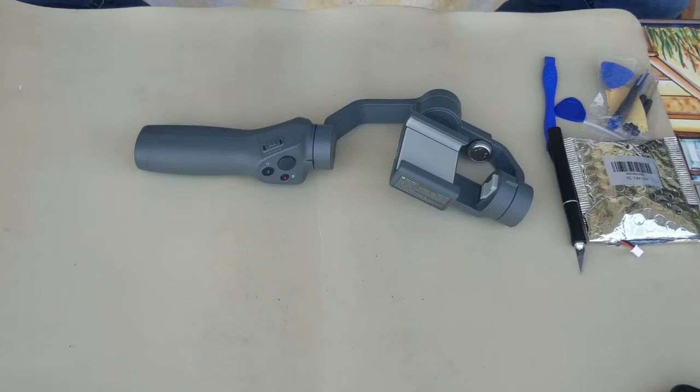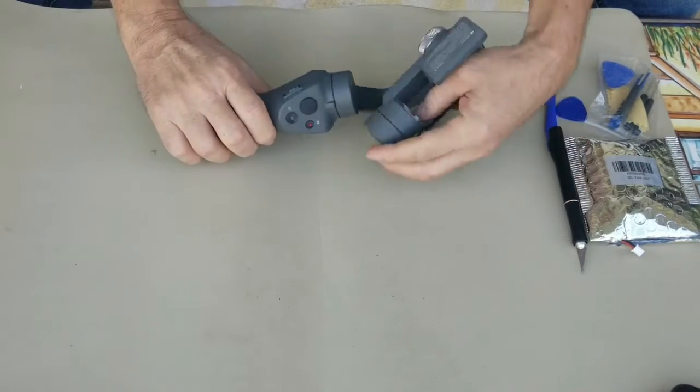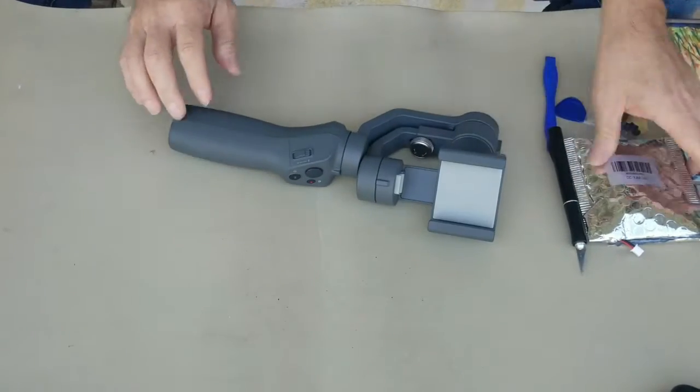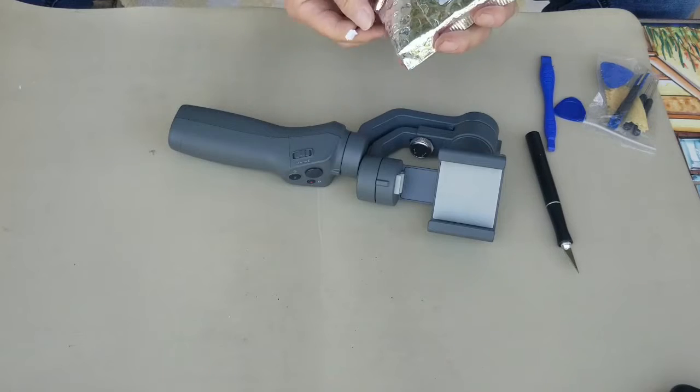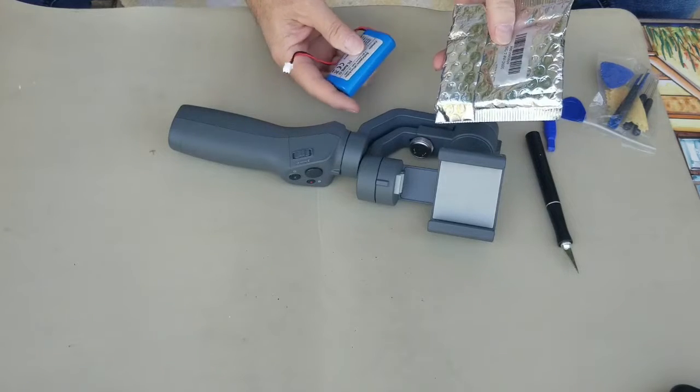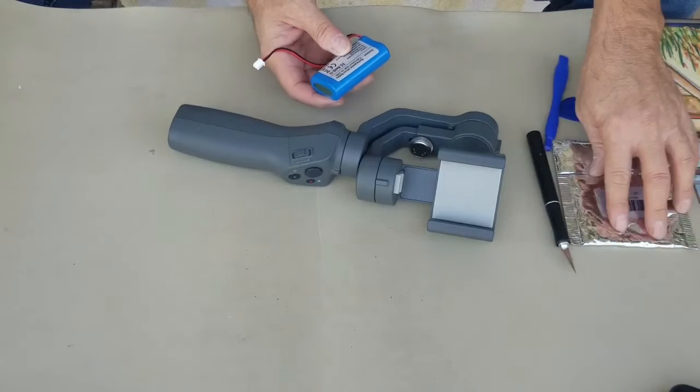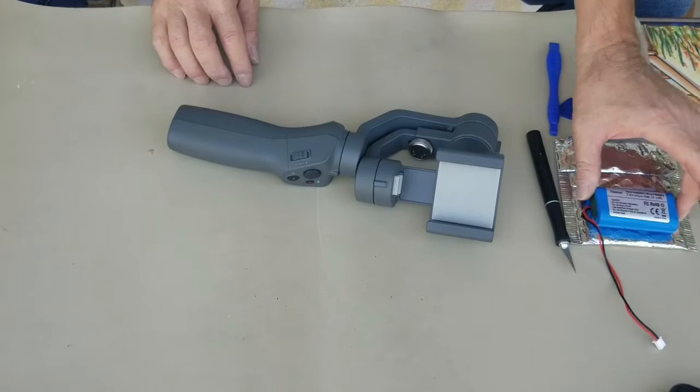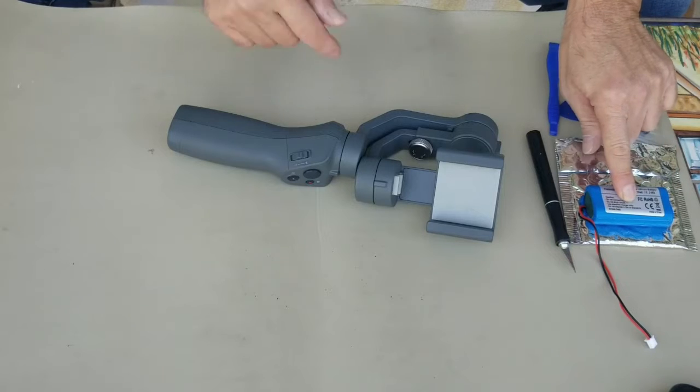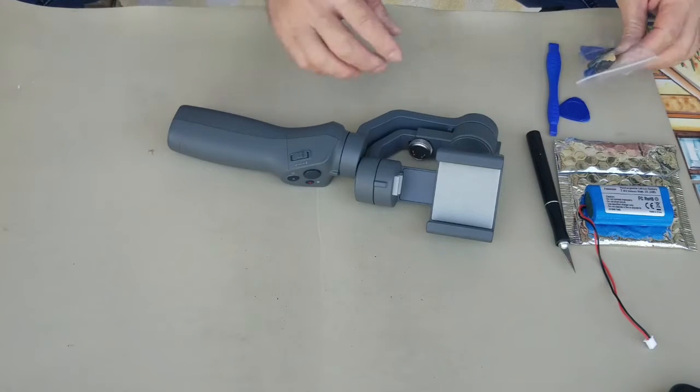Okay guys, I'm ready to start. Here's my DJI Osmo Mobile 2. This is the battery that I ordered. It's a 7.4 volt, 2600 milliamp hours, or 2.6 amp hours. It's not from DJI. I got it from Amazon, so I'll provide a link below in the description section.